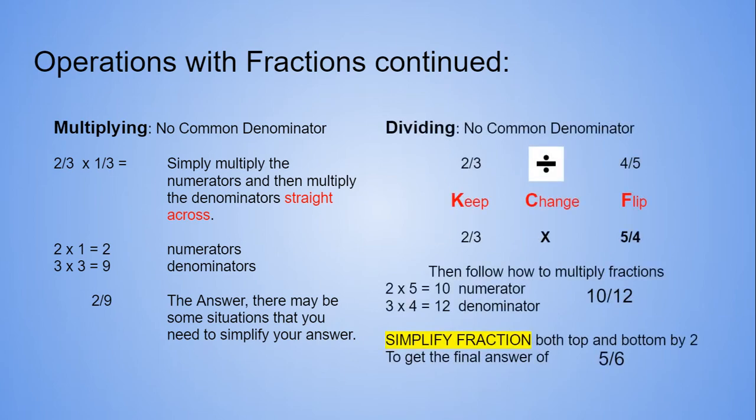Dividing fractions, there's no common denominator either. But you do use the method keep, change, flip, or keep, flip, change. So keeping the first fraction the same, changing the operation from division to multiplication, and then flipping the second fraction from 4 fifths over to 5 fourths. Then you follow your multiplying fractions rules.